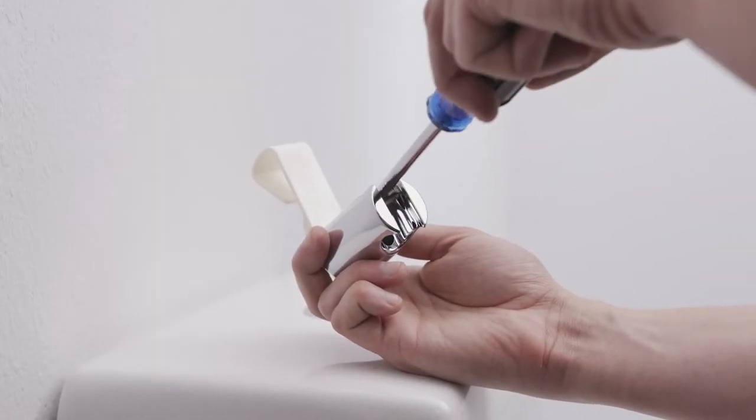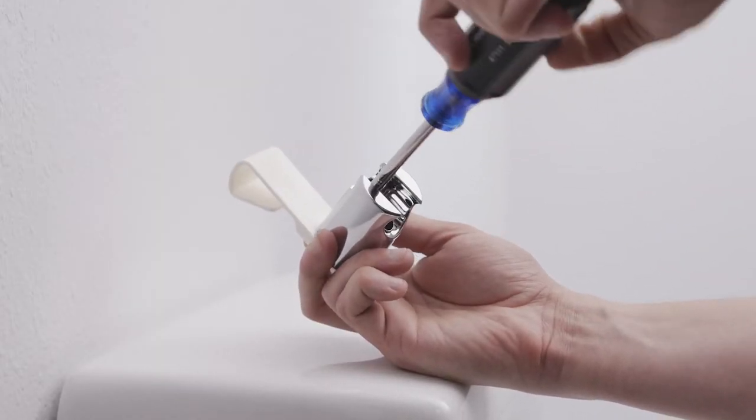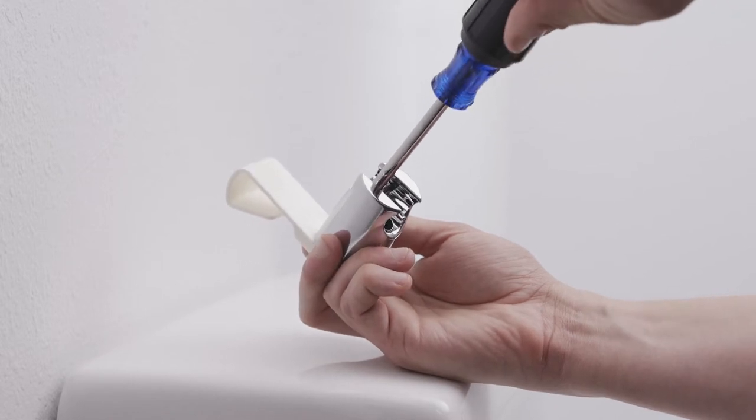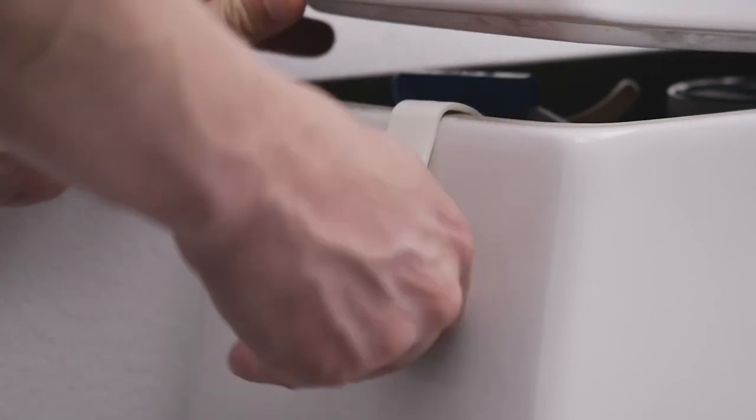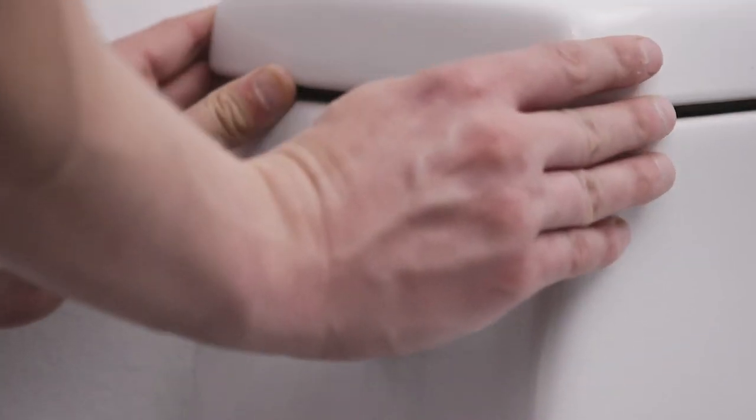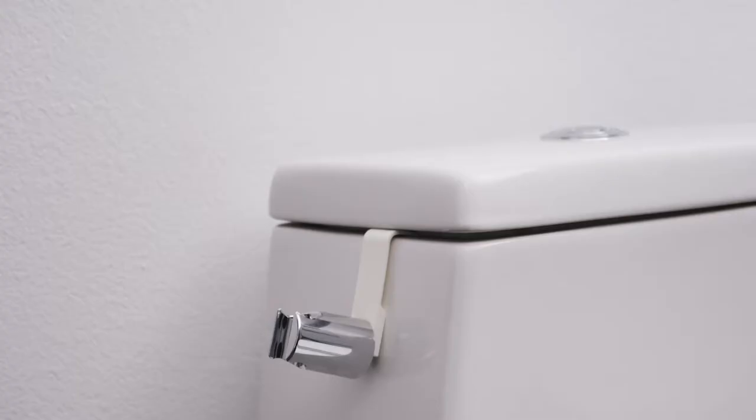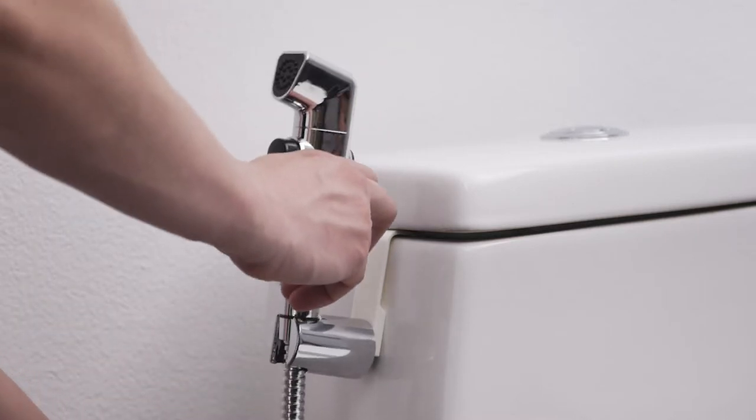To mount the bidet sprayer to the side of the toilet, attach the bidet holster to the toilet hook using the provided screw. Lift the lid of the toilet tank to hang the toilet hook. Insert the bidet sprayer into the holster.